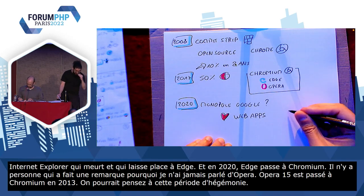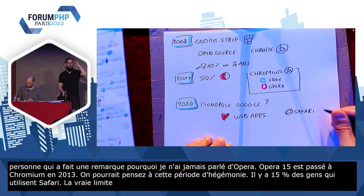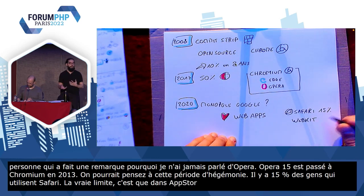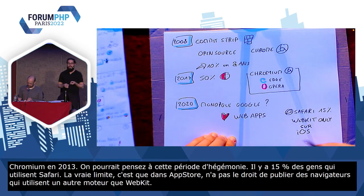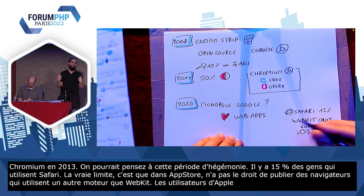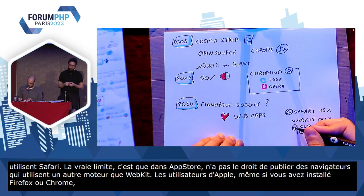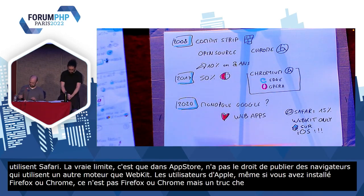Et surtout, la vraie limite, c'est que dans l'App Store, on n'a pas le droit de publier des navigateurs qui utilisent un autre moteur que WebKit. Donc, même si vous avez installé Firefox ou Chrome sur un iPhone ou un iPad, ce n'est pas vraiment Firefox, ce n'est pas vraiment Chrome. C'est un truc chelou avec WebKit en dessous. Et donc, ça limite un petit peu l'hégémonie de Google.